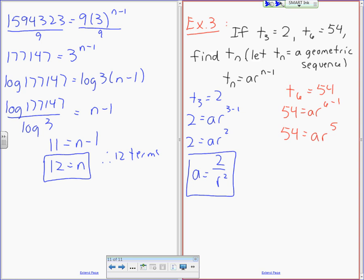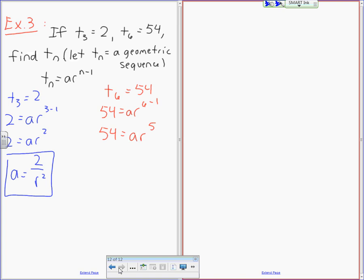Now, I'm going to do this nice and big on the right-hand side, and hopefully this is clear for people. Everywhere I see an A, I'm going to plug in 2 over R squared. So the equation is going to sub into 54 equals bracket times R to the fifth, and this is 2 over R squared. Before I go any further, are we okay on that?